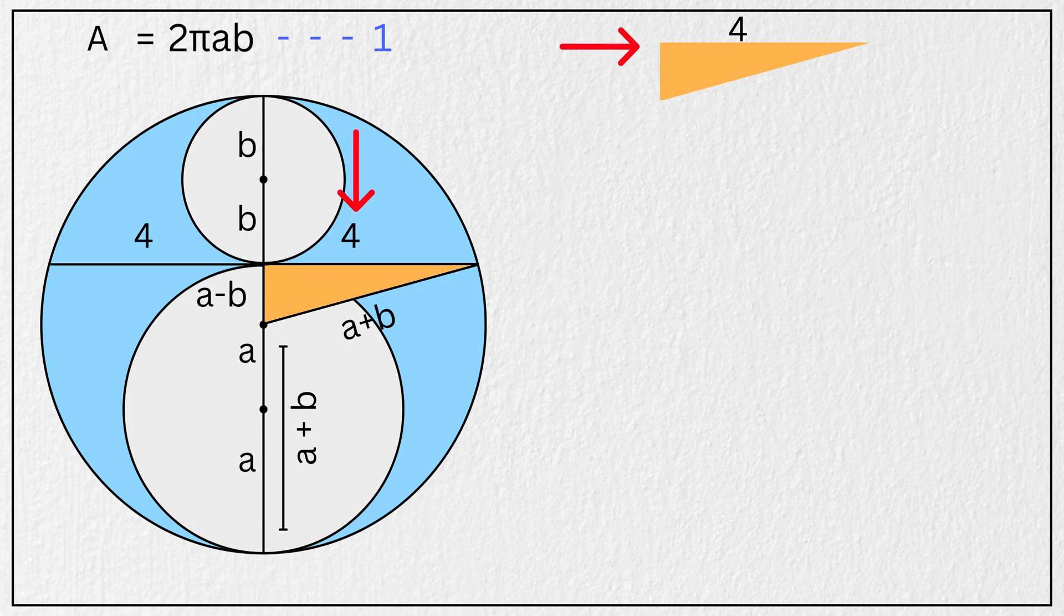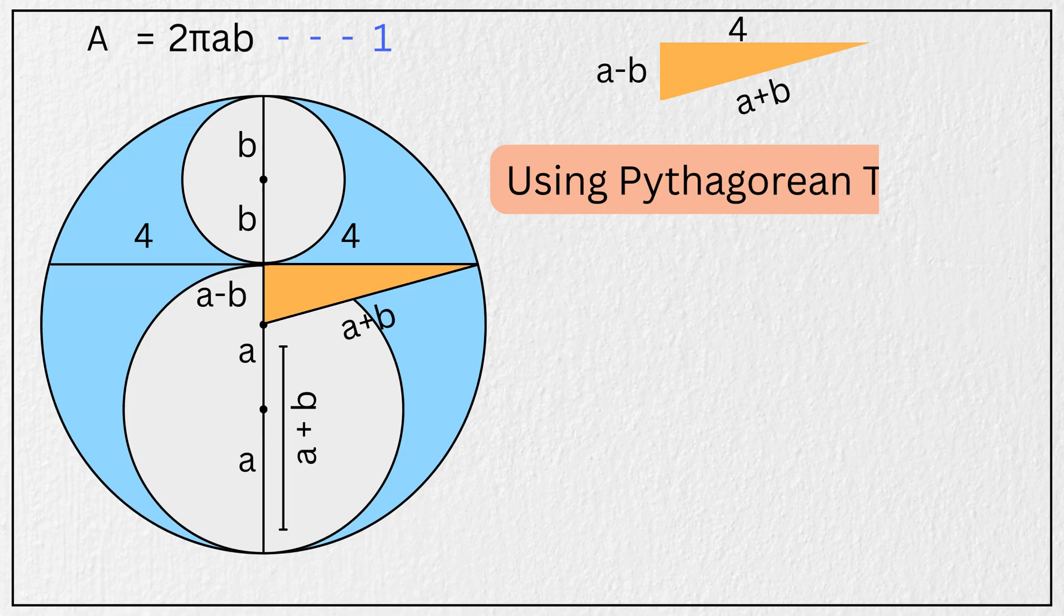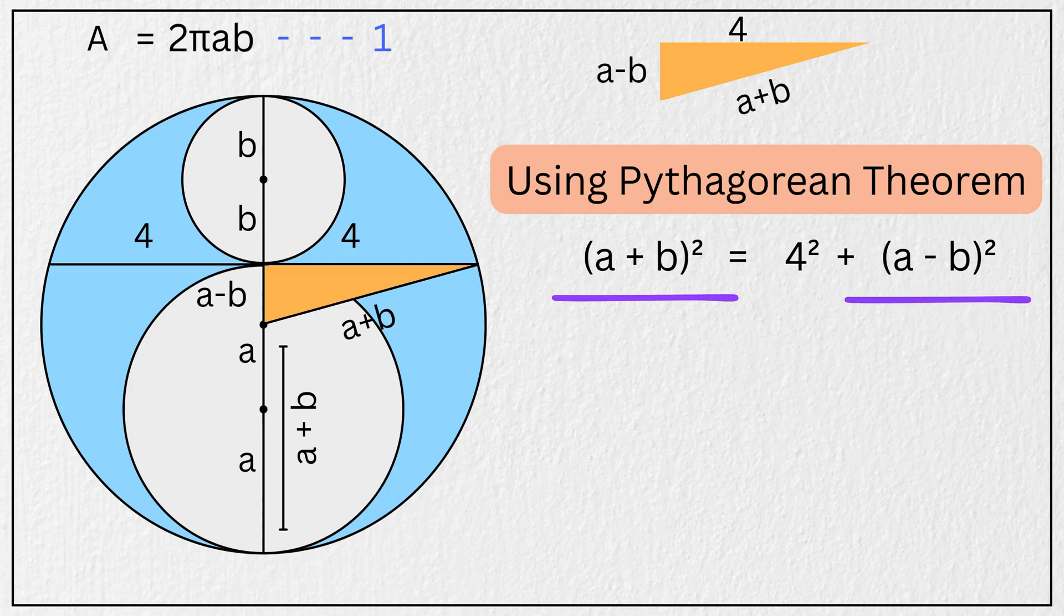Here in this triangle, one leg has length of 4 units, the other leg has length of A minus B, and the hypotenuse has length A plus B. So using the Pythagorean theorem, we have A plus B squared equals 4 squared plus A minus B squared. Now simplifying this using the algebraic identity, we get A squared plus 2AB plus B squared equals 16 plus A squared minus 2AB plus B squared.